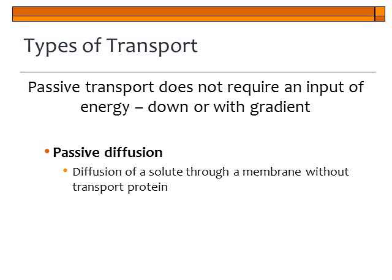There are different types of transport that can occur across this plasma membrane. One type is called passive transport. Passive transport does not require any input of energy — molecules are going down or with their concentration gradient. One type of passive transport is called passive diffusion, where a solute diffuses through the membrane without the use of any transport protein, moving from high concentration to low concentration.